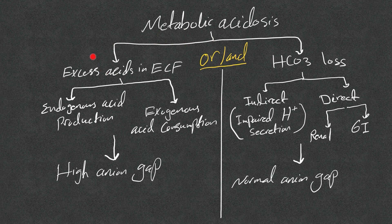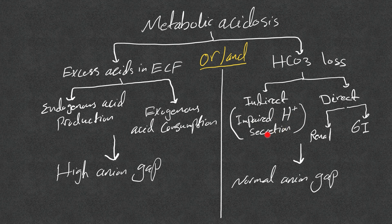Metabolic acidosis either happens from excess acid in the ECF (extracellular fluid) or from bicarb loss. The excess acid can be from endogenous acid production or exogenous acid consumption, while bicarb loss can be direct or indirect. Direct means there is direct loss of bicarb through the kidney or gastrointestinal tract.